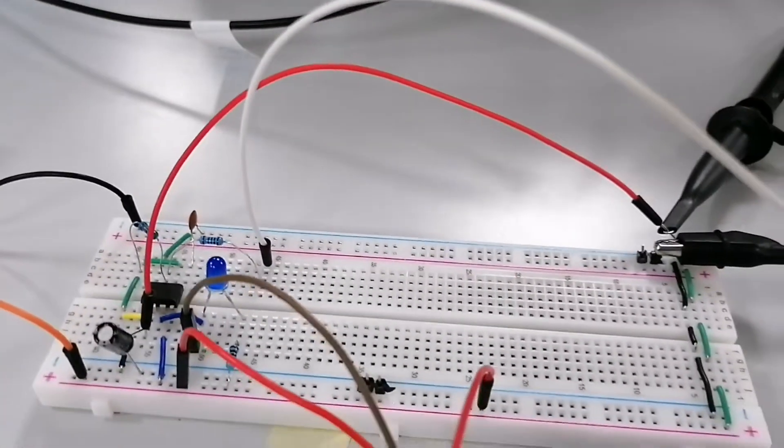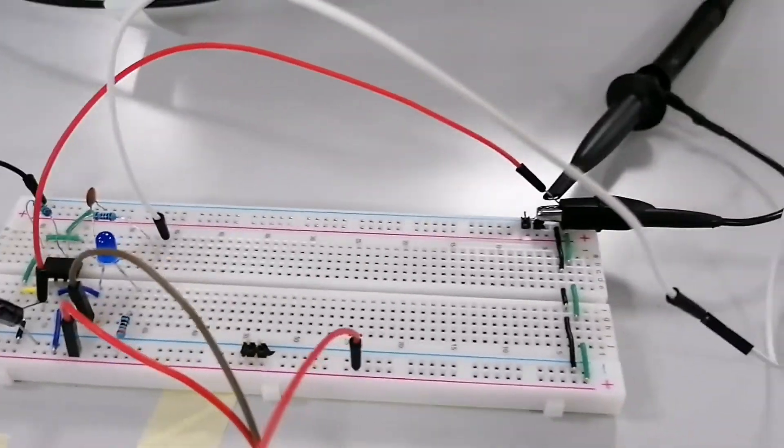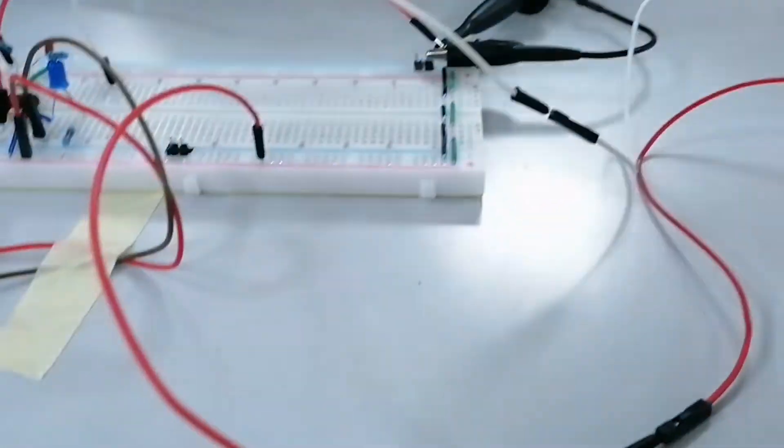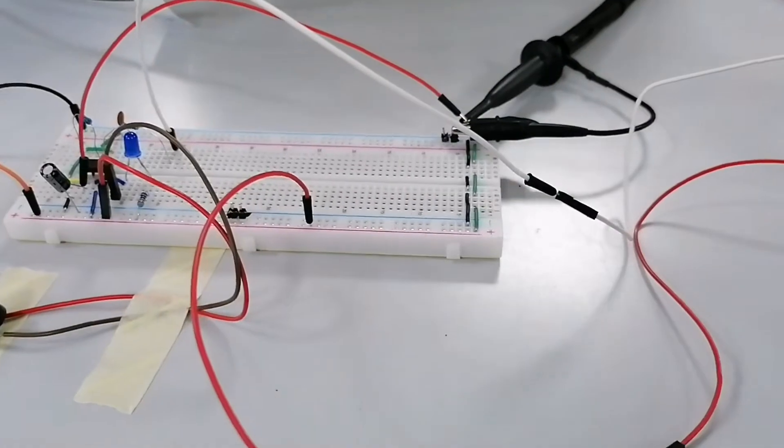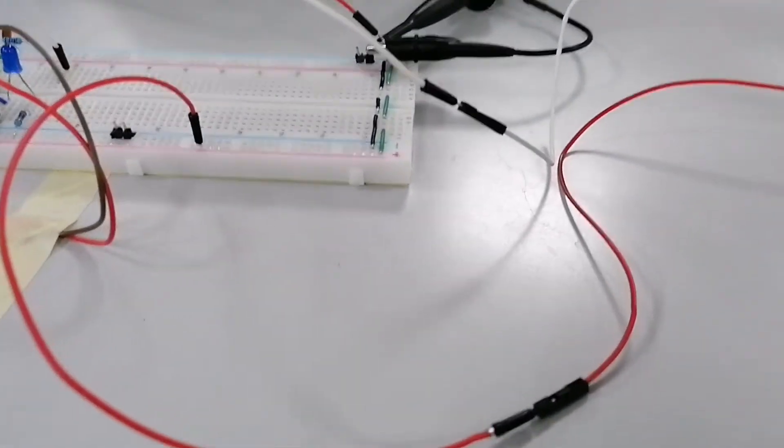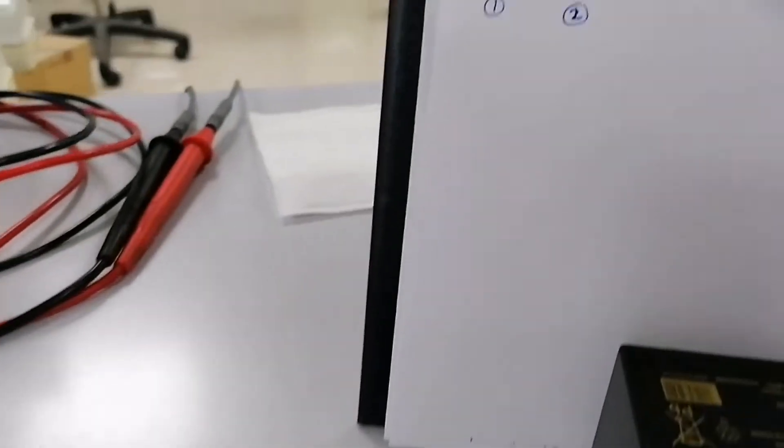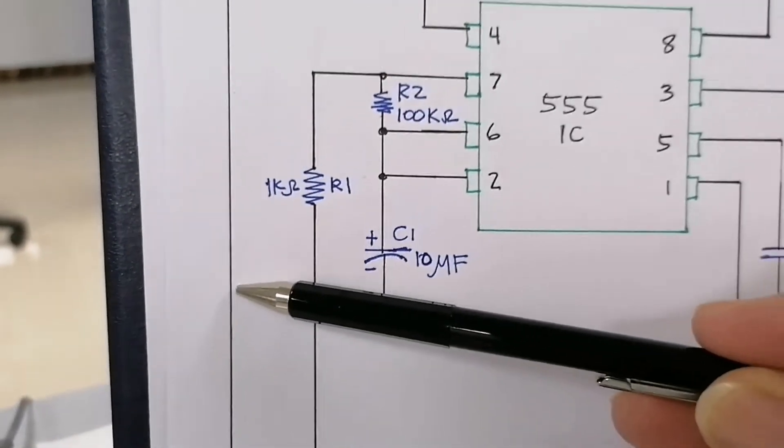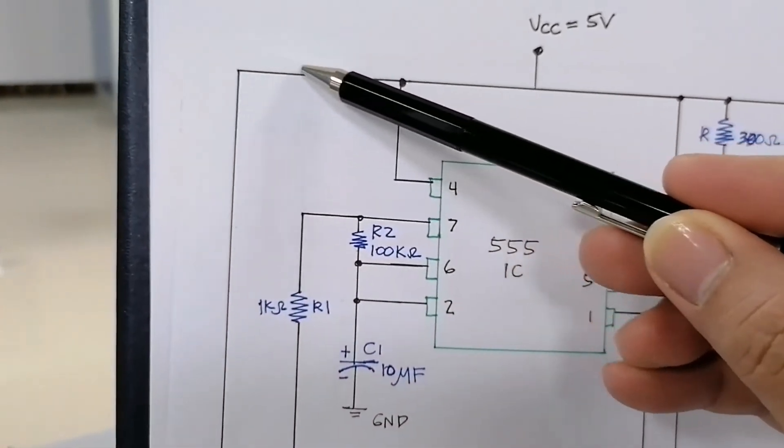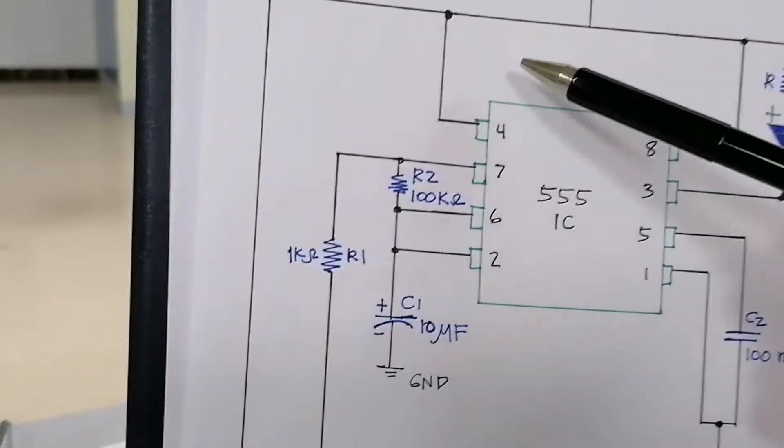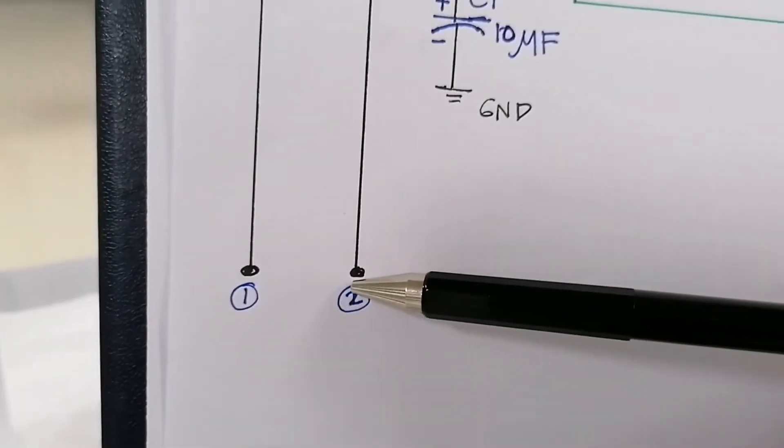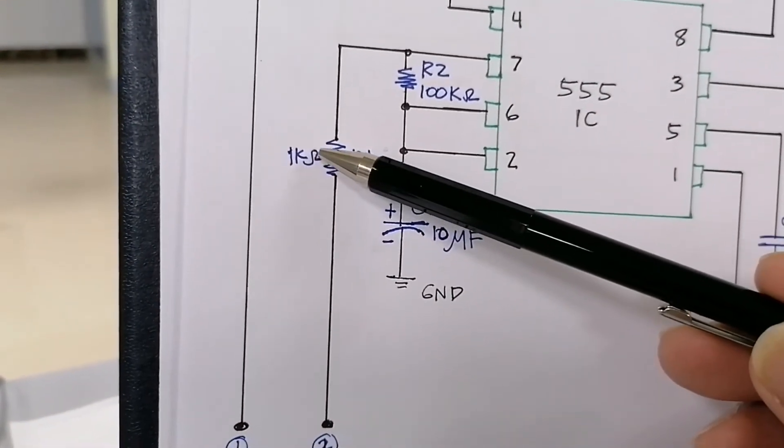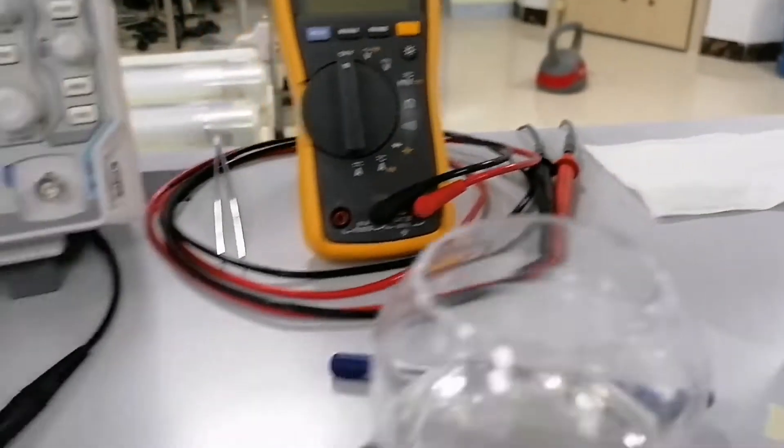So my electrodes, this one and this one, two electrodes. As you can see here, electrode one is connected to the power, five volts. And the electrode two is connected from R1, one kilo ohms.